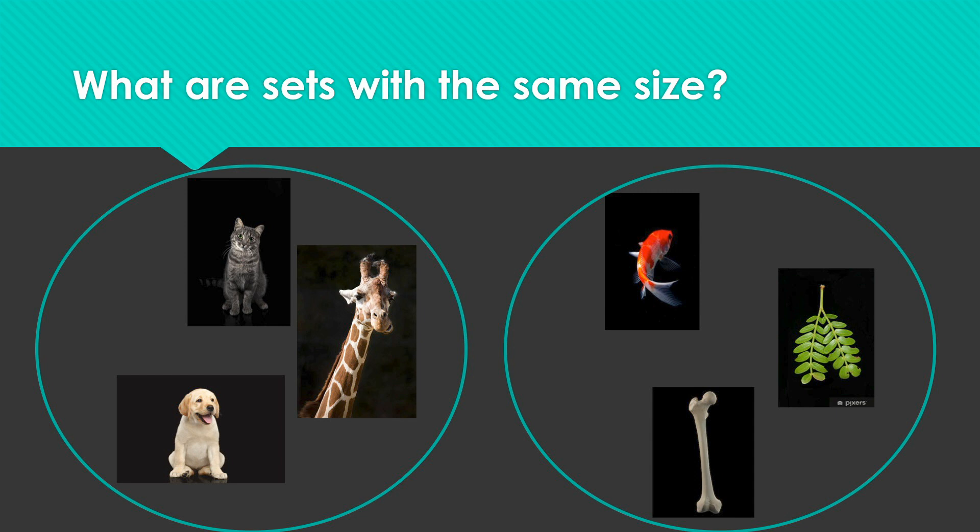On this slide you see two sets of objects. On the left you see three objects: a cat, a dog, and a giraffe. On the right hand side you see a set containing also three objects: a leaf, a bone, and a fish. How do we know that these two sets are of the same size?